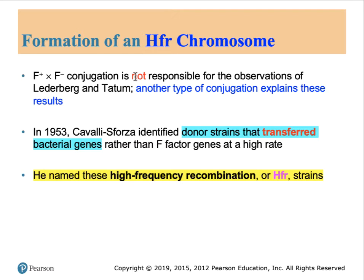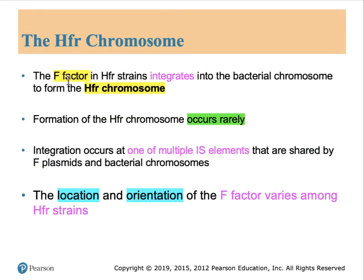Occasionally, an alternative process — much rarer — takes place. This explains how genes from the chromosome of the donor cell can be passed into the recipient cell. Cells which can transfer their own bacterial genes are known as high-frequency recombination strains, or HFR. In HFR conditions, the F-plasmid has become integrated into the bacteria's own chromosome, forming a high-frequency recombination chromosome. This occurs very rarely, and the responsible parties are the IS elements — insertion sequence elements — that are common between the F-plasmid and the bacterial chromosome.